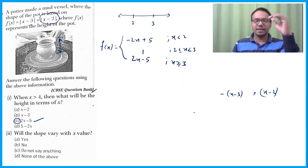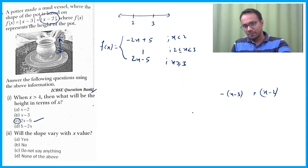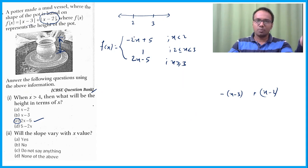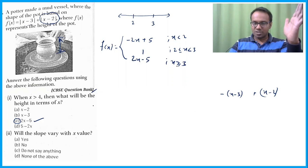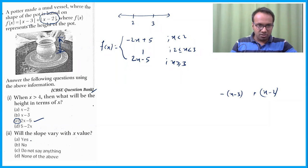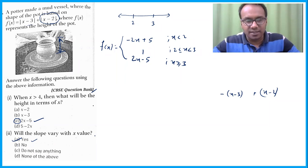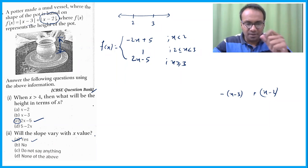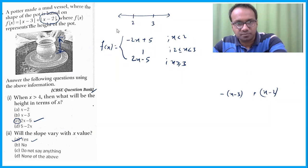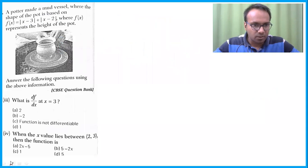Will the slope vary with value of x? The slope is f'(x). When x < 2, slope = −2. When 2 ≤ x < 3, slope = 0 (since f = 1, a constant). When x > 3, slope = 2. So yes, the slope does vary with x — there are three different slopes. The answer is yes.